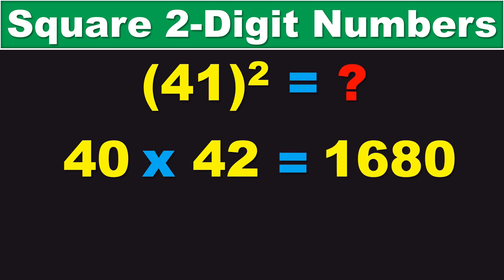And, the final step in all of this is to take the last digit of the original number, 41, and square it. And, in this case, we have 1, and 1 squared is 1.